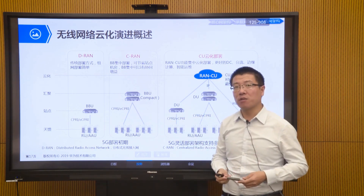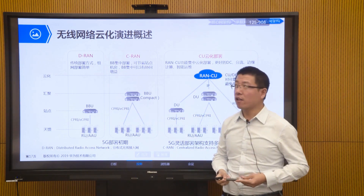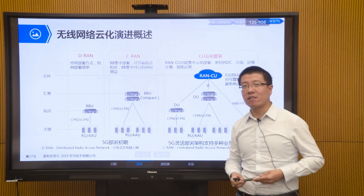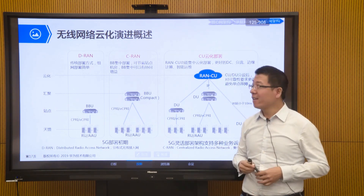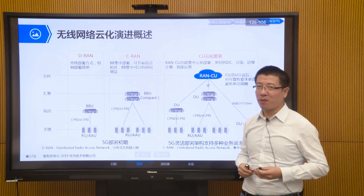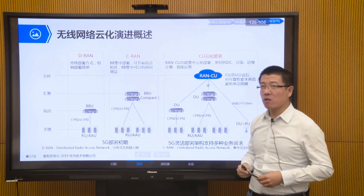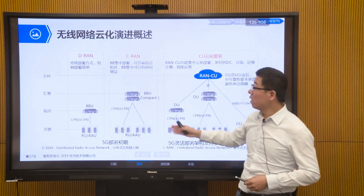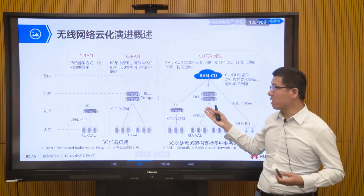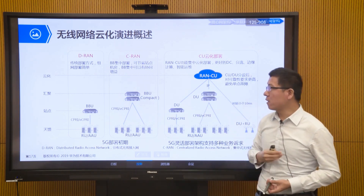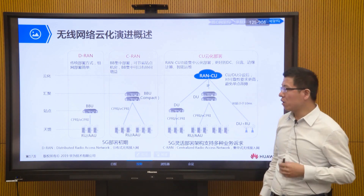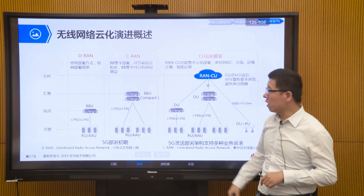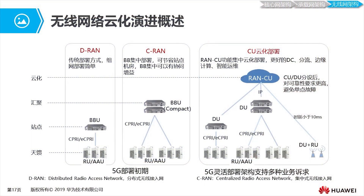At the same time, we also save machine room resources. We know that the resources of the machine room and the site are quite expensive — in the city, the annual rent for a small room is quite high, which is also a burden for operators. So through this centralized RAN (CRAN), we can save site resources and better utilize collaborative features between sites to achieve certain collaborative gains. This is our CRAN.